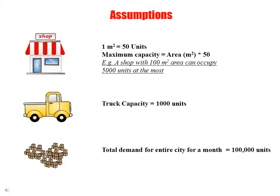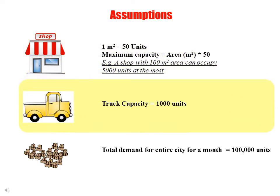The following assumptions are made for this game. First, for each shop, 1 meter square of space can accommodate 50 units. This implies that the maximum capacity of any shop is equal to the area of the shop in meter square multiplied by 50. Thus, for example, a shop with 100 meter square area can occupy a maximum of 5,000 units. Second, the maximum truck capacity is 1,000 units, meaning a truck can carry a maximum of 1,000 units at a time.